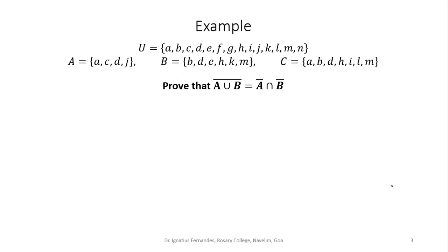Using the same universal set and sets A, B, C, let us verify one of De Morgan's laws. We have already done it using diagrams and general definitions; let us do it for these particular sets as well. To find the left hand side, that is (A union B) complement, we first find A union B.